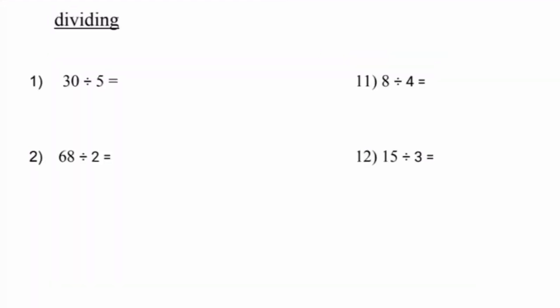Our second topic is division, and it's asking us to divide the numbers below. Number one, they give us the equation 30 divided by 5. The opposite of division is actually multiplication. So therefore, memorizing and knowing the multiplication table can help us lots when dividing. We know that 5 times 6 equals 30, and 6 times 5 also equals 30. Therefore, 30 divided by 5 equals 6.